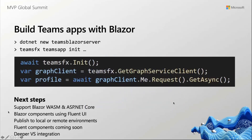We have this new Blazor template, which has all of the same authentication goodness that we give you on the JavaScript side. It's currently a little bit lighter-featured than the web stack, but we're hoping to invest in this and bring it to parity as well. You're able to get your user context and access to Microsoft Graph in one line of code.